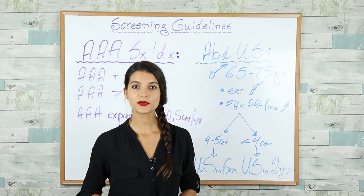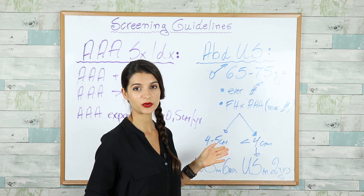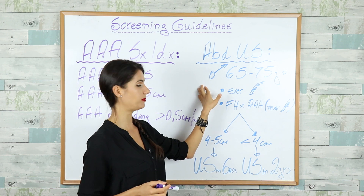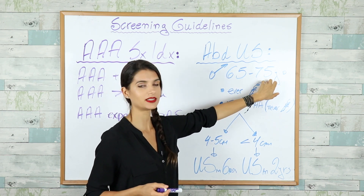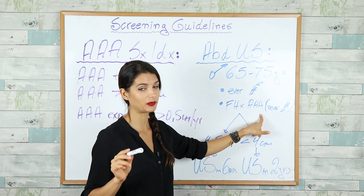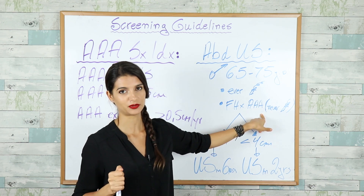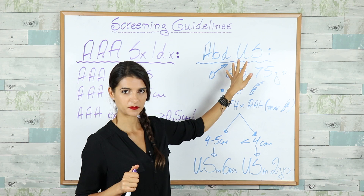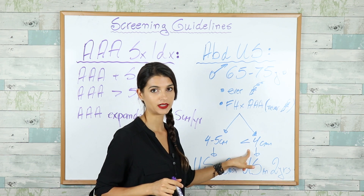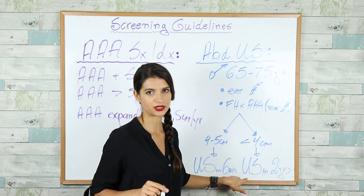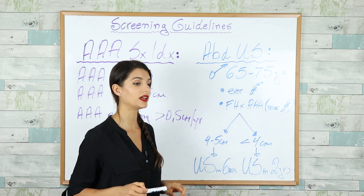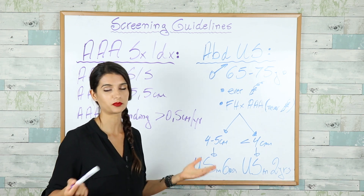For Abdominal Aortic Aneurysm, you have to know two guidelines: who do we screen, and who gets the surgery. We screen with abdominal ultrasound every male patient who is between 65 and 75 years of age who has ever smoked, or who has never smoked but has a family history of abdominal aortic aneurysm. If we find an aneurysm less than 4 cm in diameter, we repeat the ultrasound in 2 years. If the aneurysm is between 4 to 5 cm, we repeat the ultrasound in 6 months.